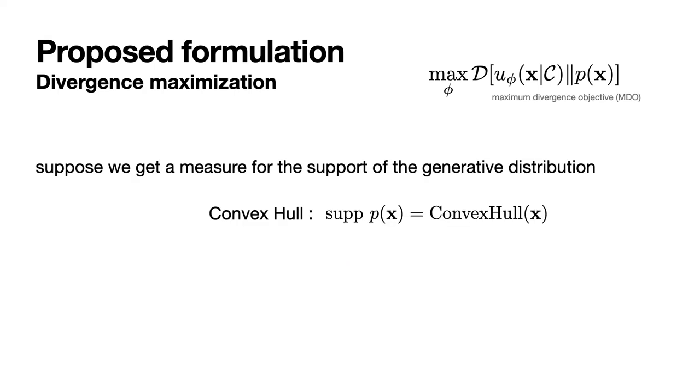An interesting criteria that will allow us to delineate two different setups would be to measure the support of the generative distribution. By example, this could be made by obtaining the convex hull of generated examples, or a high probability threshold measure.